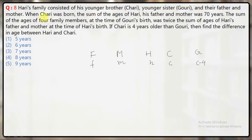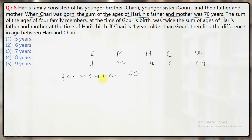When Chari was born, the sum of ages of Hari, his father and mother was 70 years. Right now Chari is C years old, so when Chari was born, father's age was F minus C, mother's was M minus C, and Hari's age was H minus C. So the equation becomes: (F minus C) plus (M minus C) plus (H minus C) equals 70, which simplifies to F plus M plus H minus 3C equals 70. This is Equation 1.